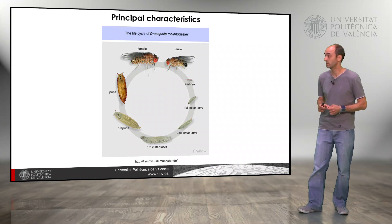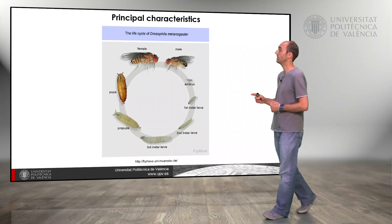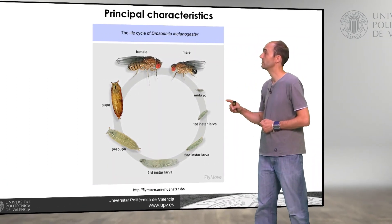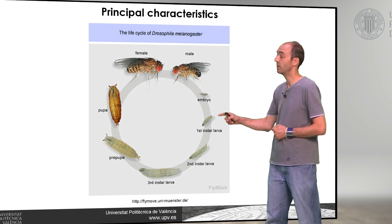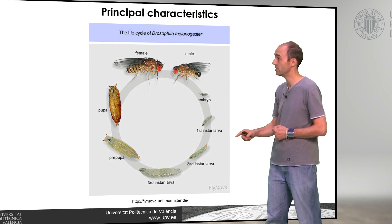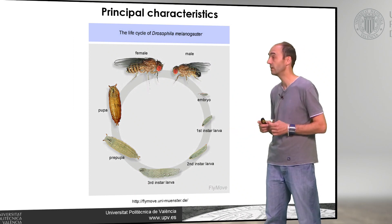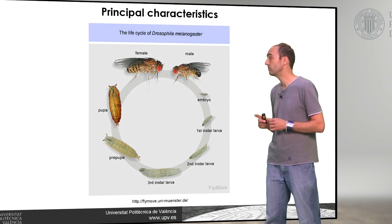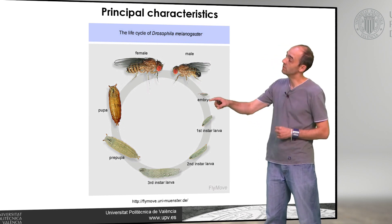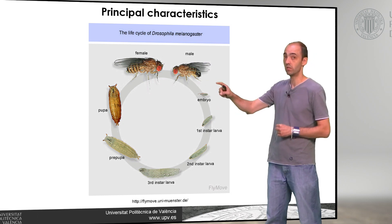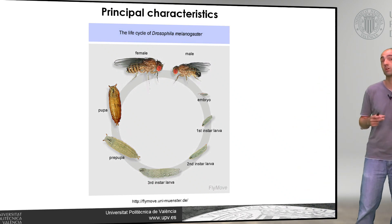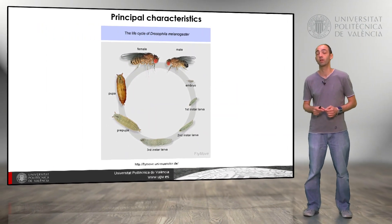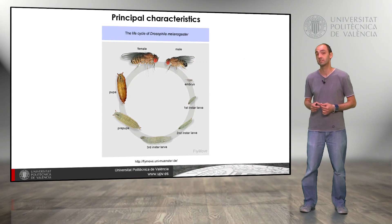The life cycle is complex but well known. We have the adult flies — the female is fecundated and lays an egg, an embryo. From that embryo a larva appears; we have three different larval stages. The larva feeds as fast as it can, and when completely formed it becomes the pupa. In the pupa, metamorphosis occurs, and an adult fly emerges. Within a few hours we have fertile adult flies and the cycle can start again.